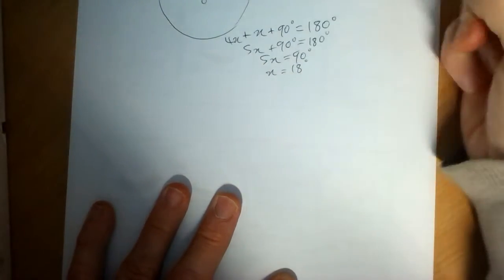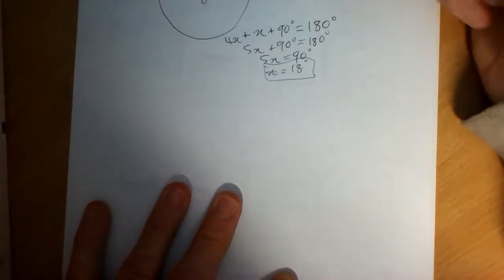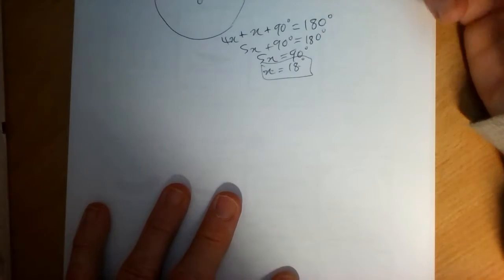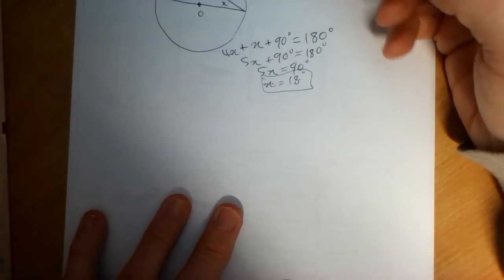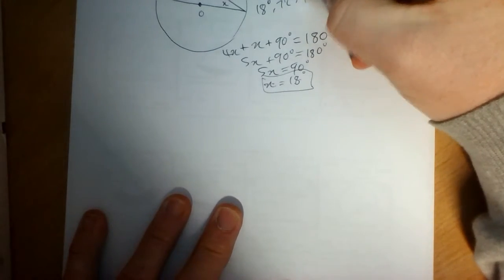Now, one thing you must remember to do is not just to rejoice at the moment you get x. You have to remember to answer the question. If they said find x, then that's fine. If they say find the angles of the triangle, then the angles are 18, 72, and 90.